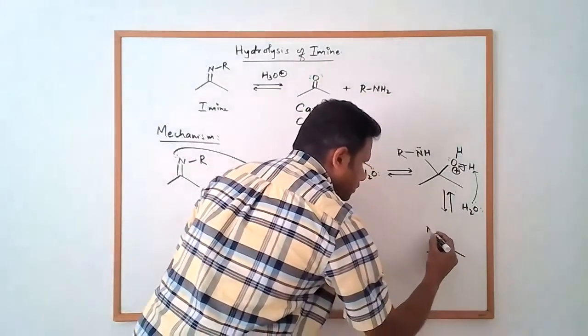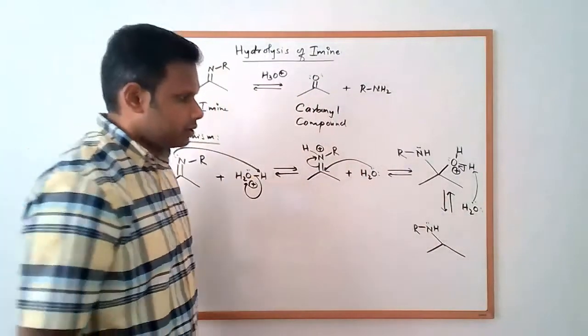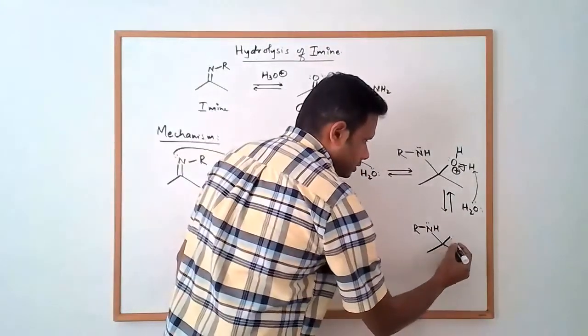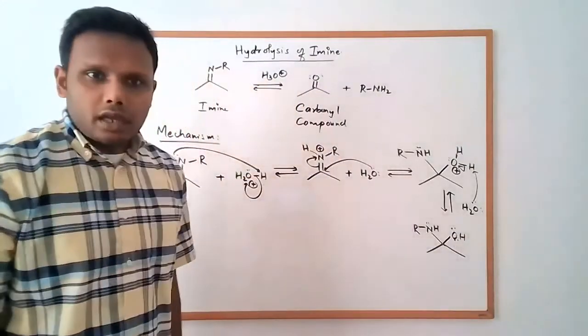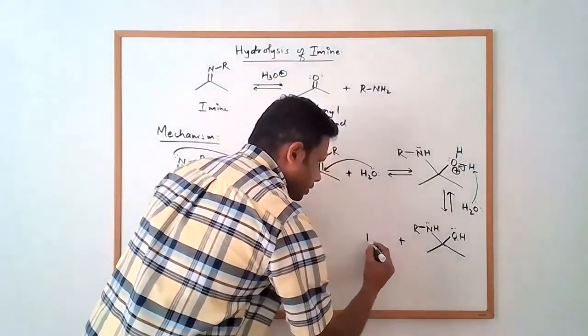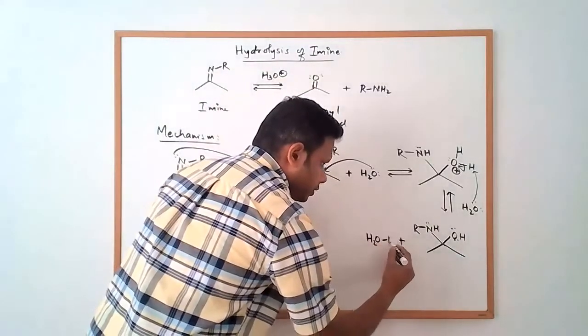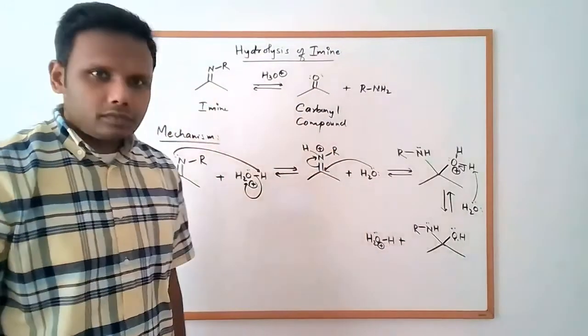to give us N-H and R, one lone pair on the nitrogen now and this oxygen would have two lone pairs and no formal charge plus we will make hydronium ion again.